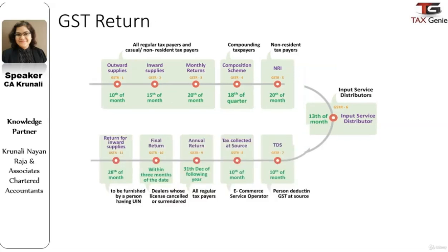GST Return 7 is to be filed by the entities who are deducting tax at source. It is to be filed by the 10th of the next month. GST Return 8 is to be filed by entities collecting tax at source, also by the 10th of the next month. E-commerce service operators are the classic examples of people required to file this return.